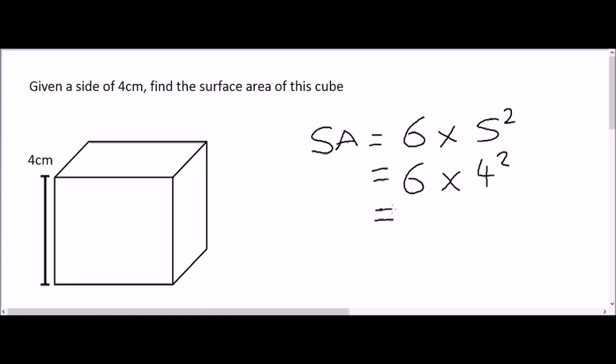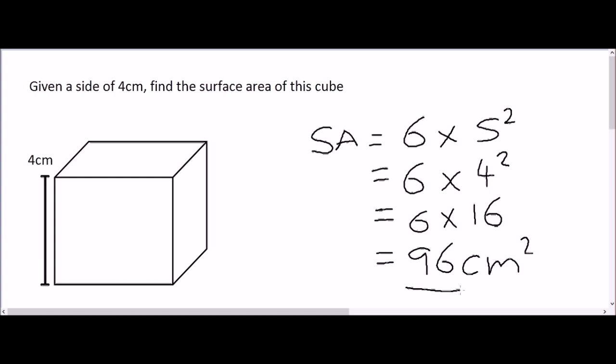So that gives us 6 multiplied by 16, because 4 times 4 equals 16. And 16 times 6 gives us a total of 96. Remember, the length is given in centimeters, so for any area calculation you need to give the unit of measurement squared. The answer is 96 centimeters squared, which is the surface area of this cube.